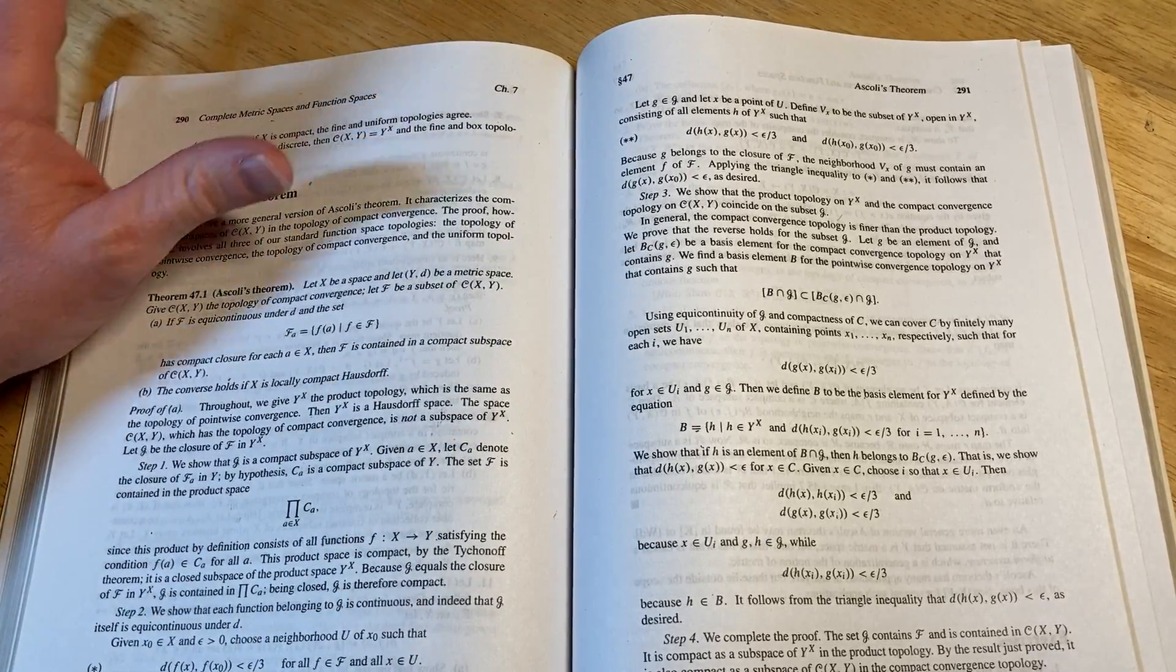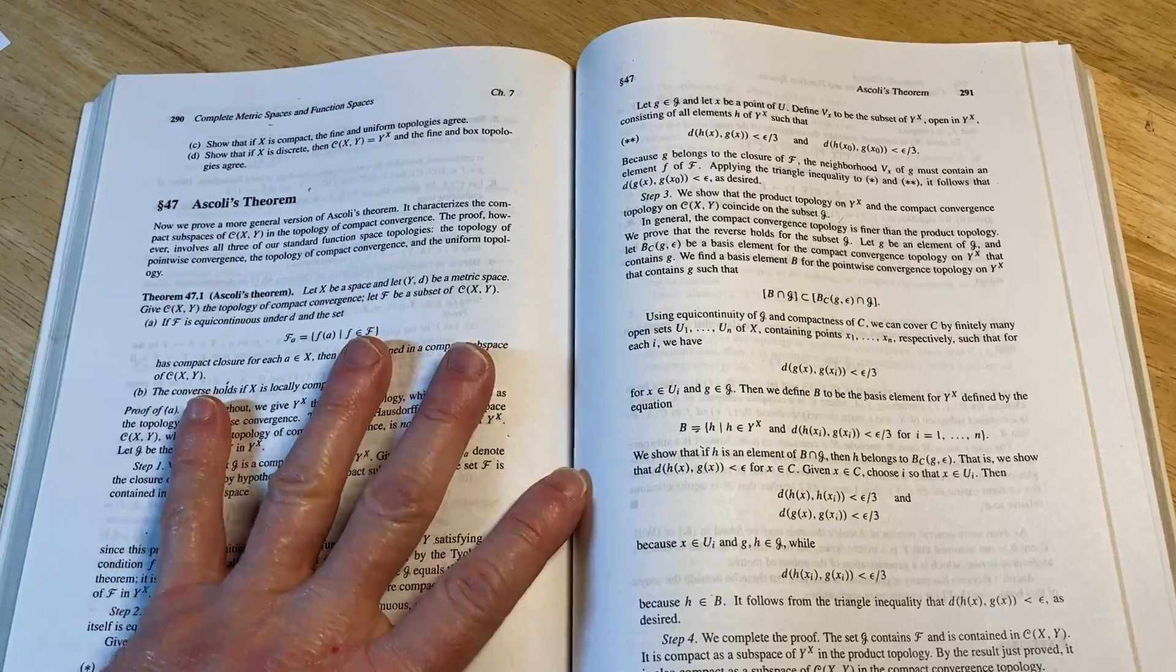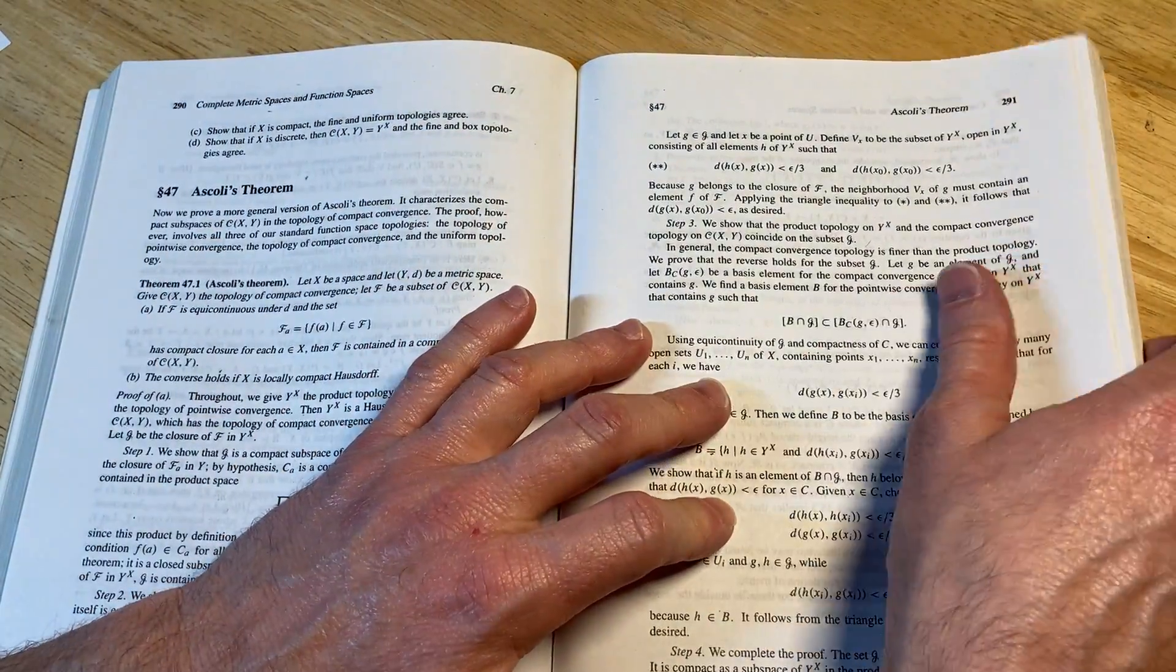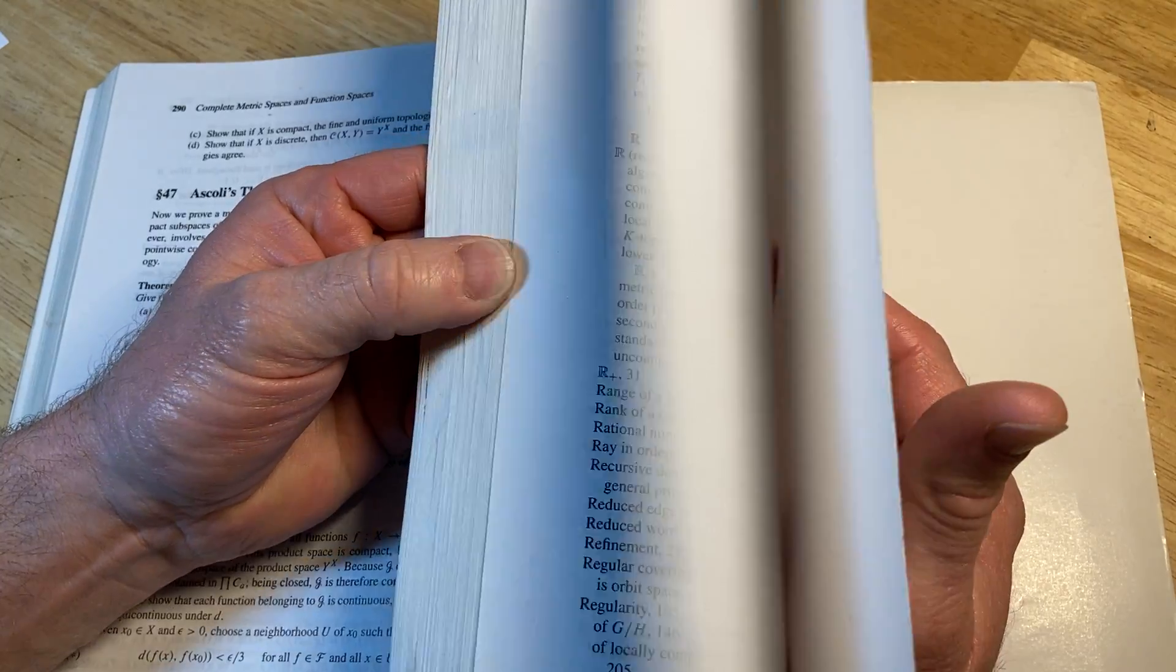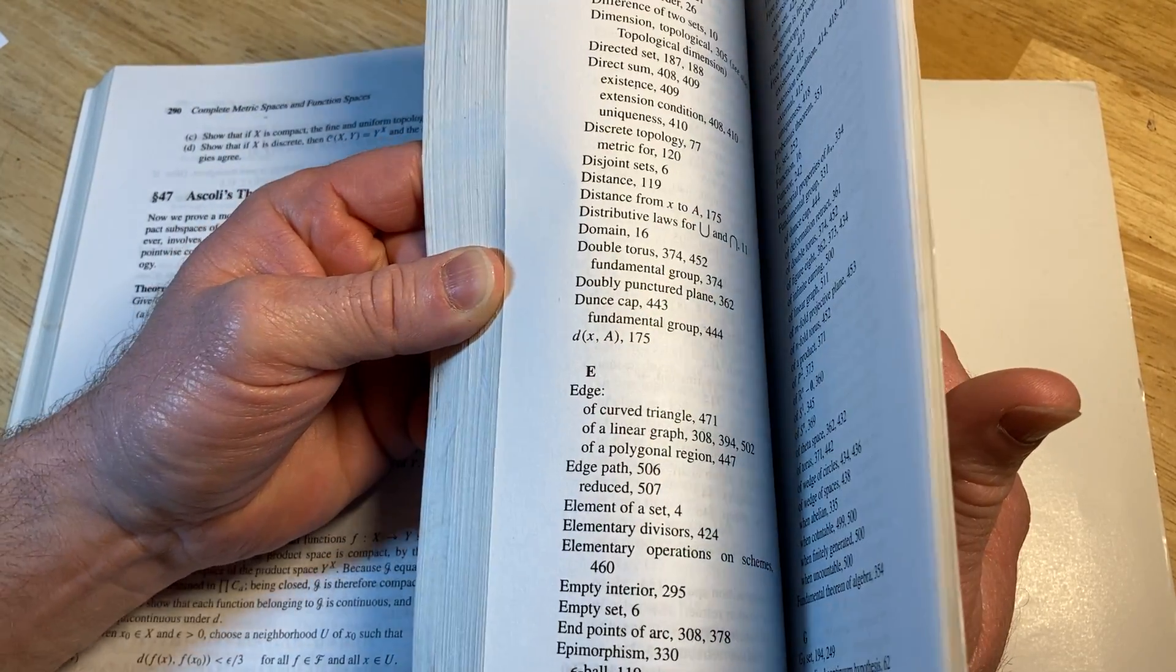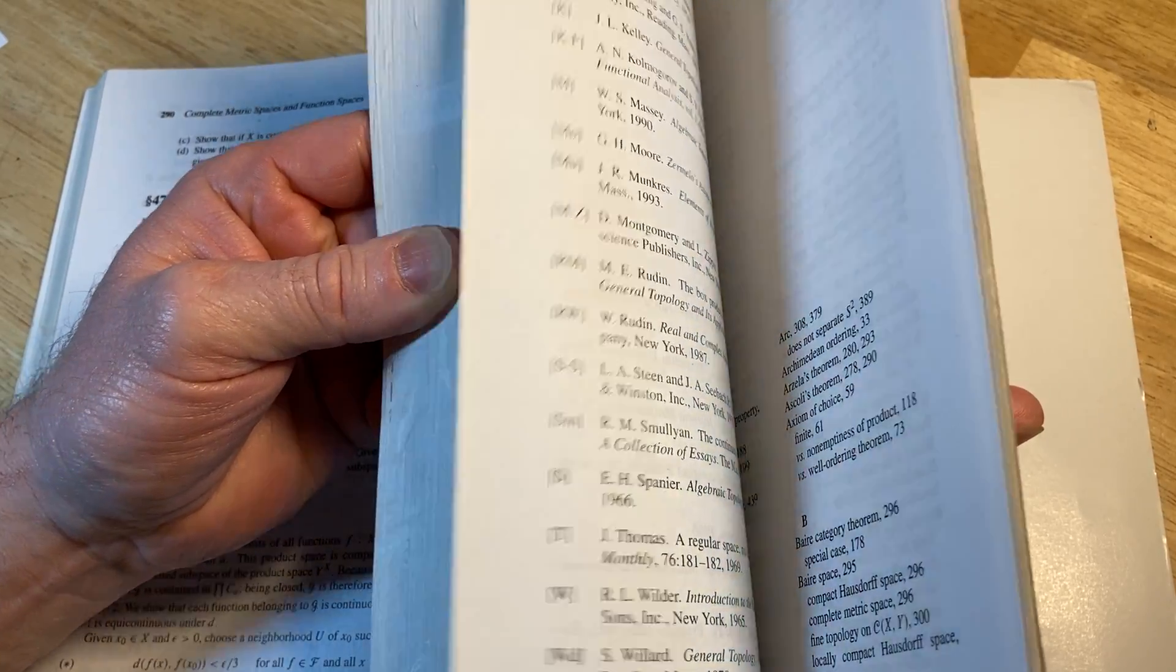I want to start by telling you what I think is the worst thing about this math book. The worst thing about this math book is that it doesn't have any answers in the back of the book. I think that is not good. I think it should have answers. I wish it did, even just some answers, but it doesn't.